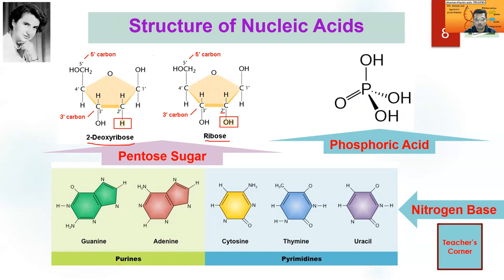There are two types of nitrogenous bases. Purines are double ring structures — a six-carbon ring and a five-carbon ring fused together. There are two types of purines: adenine and guanine. Accordingly, there are three types of pyrimidines: cytosine, thymine, and uracil — whereas uracil is found exclusively in RNA. So these are the three components as far as the structure of nucleic acid is concerned.